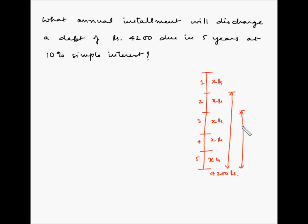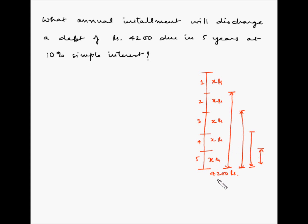Similarly, at the end of the second year, the installment you pay helps you avoid interest for the next three years. The same applies to installments paid at the end of the third and fourth years. Basically, the installment you pay plus the interest you are avoiding — or equivalently, the interest the bank can gain — is equal to 4200 rupees.